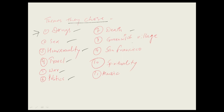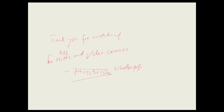The themes Beat Generation writers chose include drugs, sex, homosexuality, travel, war, politics, death, Greenwich Village, San Francisco, spirituality, and music.